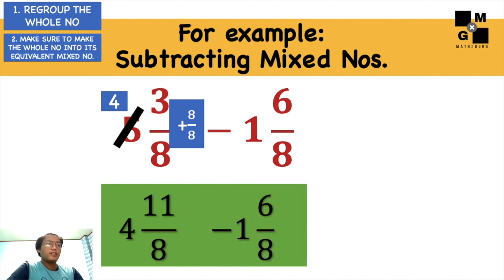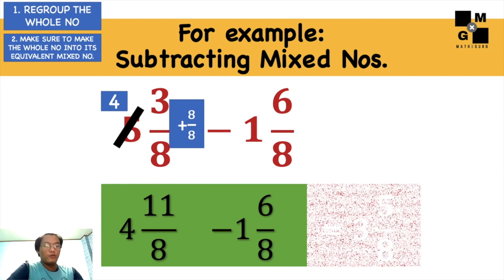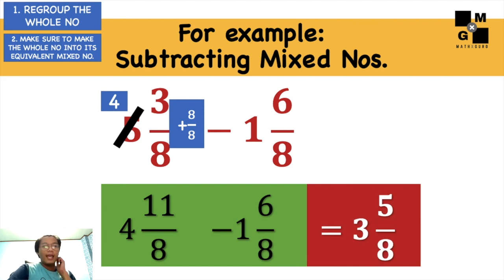So it will give us 4 minus 1 is 3, and 11 minus 6 is 5 over 8. So 3 and 5/8, and this is the answer.